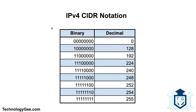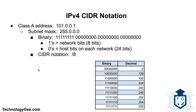Let's get into some IPv4 CIDR notation examples. If you recall from the last video on classful subnetting, we covered three primary classes: Class A, Class B, and Class C. Here we have a Class A address — 101.0.0.1 — with a subnet mask of 255.0.0.0. In binary, that's eight ones followed by 24 zeros. The ones represent the network bits and the zeros represent the host bits.